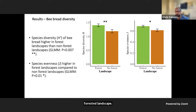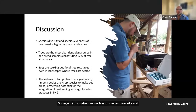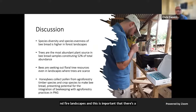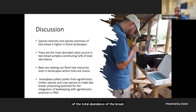In summary, species diversity and species evenness of bee bread were particularly higher in forest landscapes, and this is important as diversity is associated with better nutritional balancing in honeybee diets — forests may serve as a healthful resource for honeybees in the tropics. Trees were the most abundant plant source in bee bread samples, constituting almost 50% of the total abundance, and bees were seeking out tree floral sources even in landscapes where trees were particularly scarce, highlighting the importance of trees for honeybee diets in tropical landscapes.